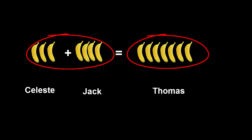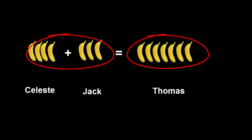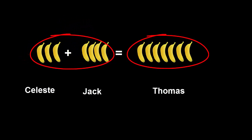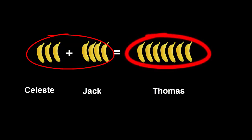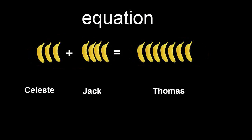And it doesn't matter which order we count them. Three bananas plus four bananas is the same as four bananas plus three bananas. Either way, what's on the left of the equal sign is the same as what's on the right of the equal sign. This is an equation.